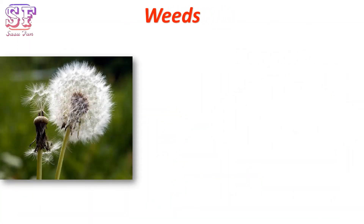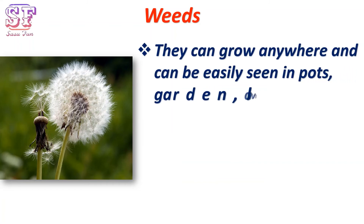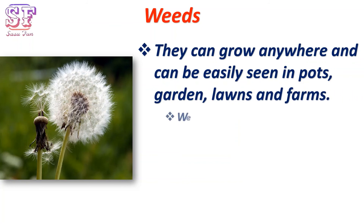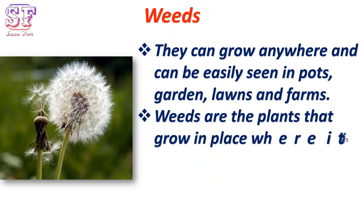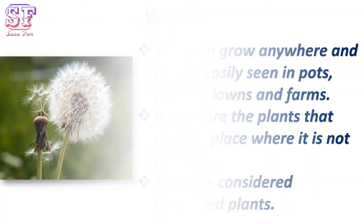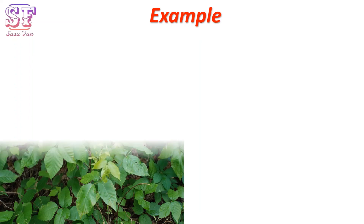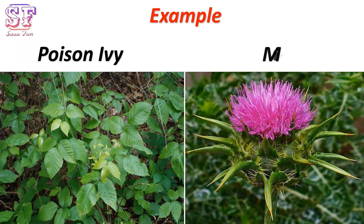Weeds are plants that grow where they are not needed. They can grow anywhere and can be easily seen in ponds, gardens, lawns, and farms. They are considered unwanted plants. Examples are poison ivy and milk thistle.